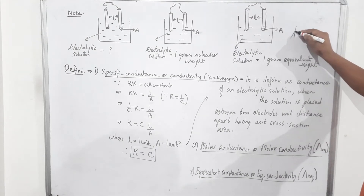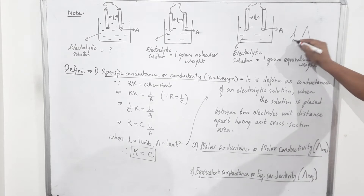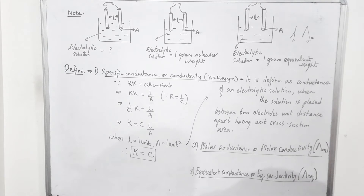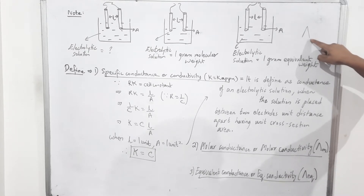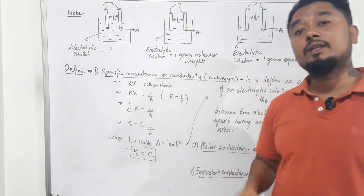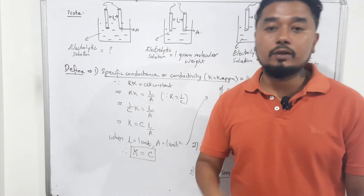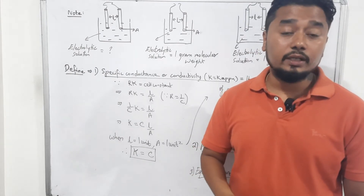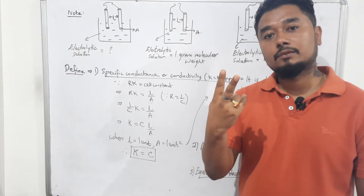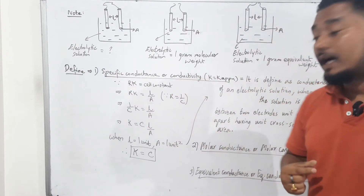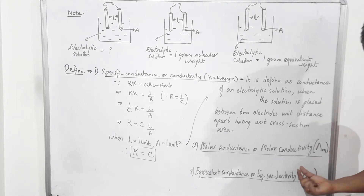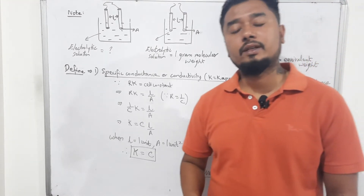Do remember: small lambda and capital lambda are different. Capital lambda with suffix m becomes molar conductance; with suffix eq it becomes equivalent conductance. So the symbol for molar conductance is Λm and for equivalent conductance is Λeq. All three definitions are similar in type — all three will not come in the exam; out of three, any one may be asked. But I am teaching you all three.